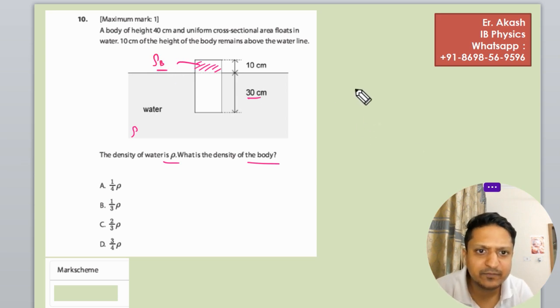First, we need to make the free body diagram. The downward force will be the total mass of the body. Assume the cross sectional area is A, since it has uniform cross sectional area.